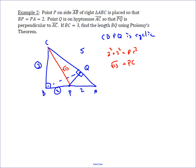We can find PQ by using similar triangles. Angle A is congruent to itself and Q is the right angle, so triangle PQA is similar to triangle CBA — angle A is the same in both, Q corresponds to B (both right angles), and P corresponds to C.